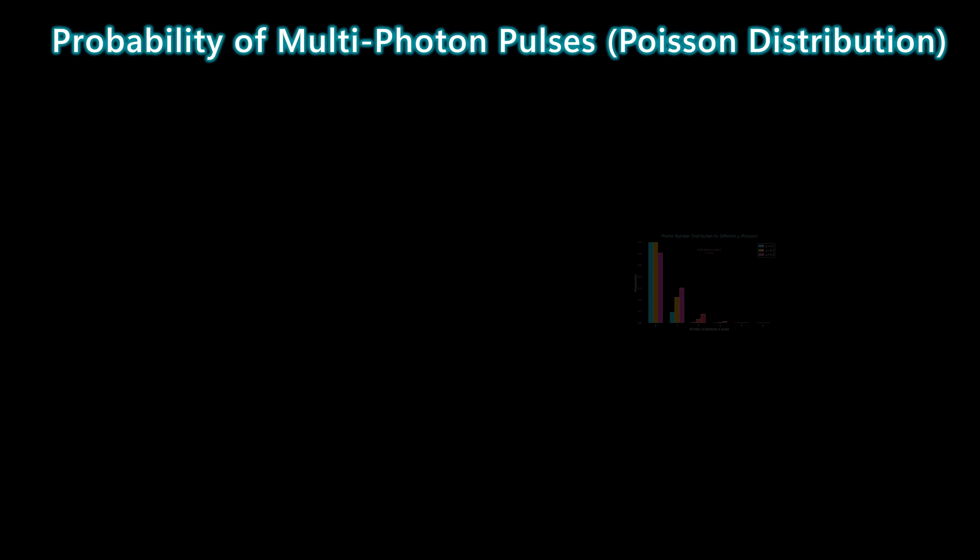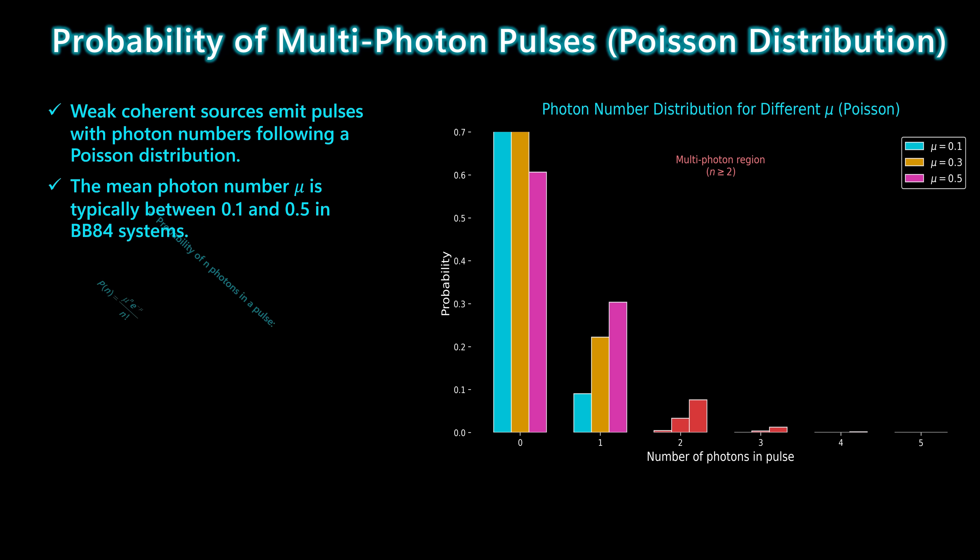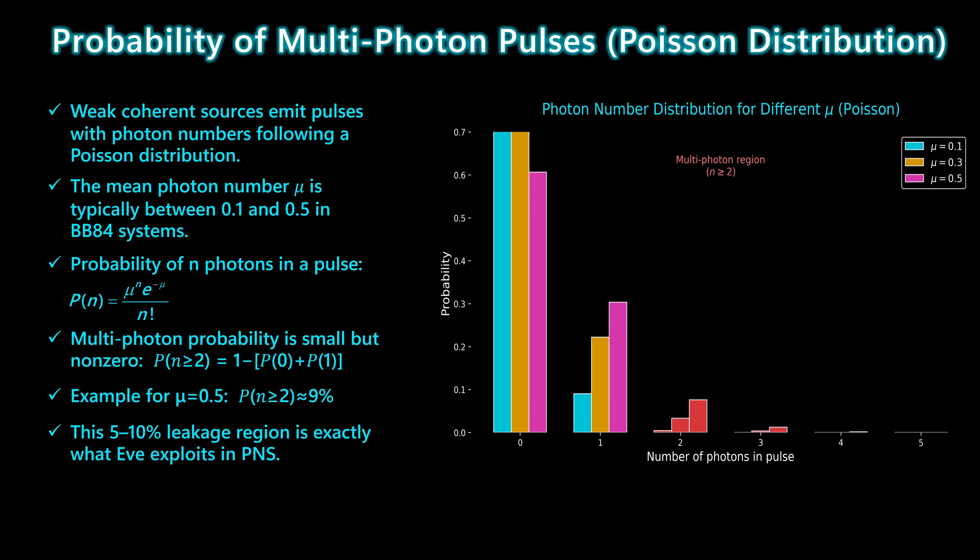In weak-coherent BB84 systems, the number of photons in each pulse follows a Poisson distribution. The mean photon number is typically between 0.1 and 0.5, depending on how the system is calibrated. Most pulses contain zero or one photon, but a small fraction contain two or more. Using the formula for the photon pulse probability, we can calculate the multi-photon probability as one minus the probability of zero photons and one photon. When the mean photon number is 0.5, about 9% of the pulses contain two or more photons. Even when the mean photon number is lower, there's still a non-zero multi-photon tail. This 5 to 10% leakage region is exactly what Eve exploits — every multi-photon pulse gives her a perfect copy of the bit, while Bob continues to see completely normal behavior.